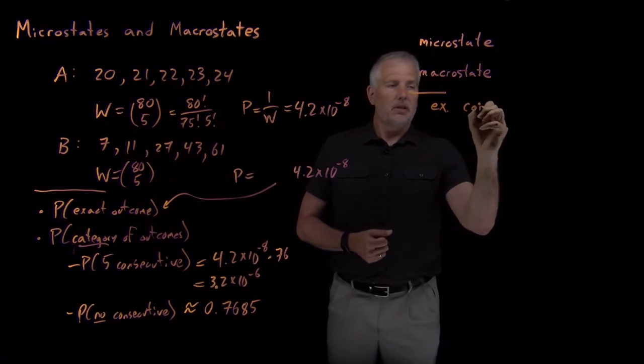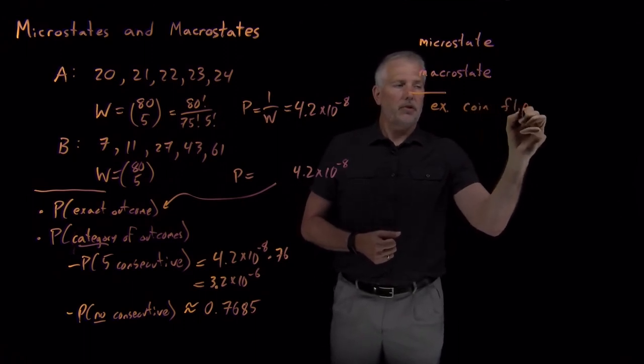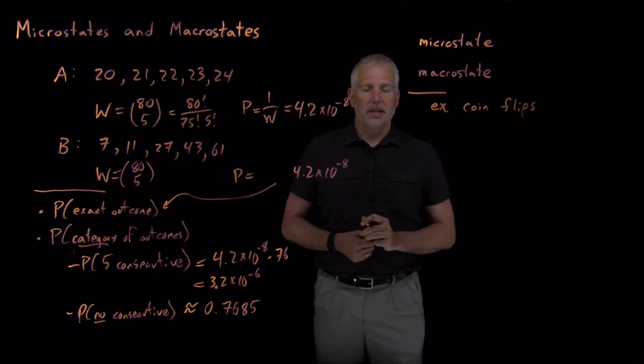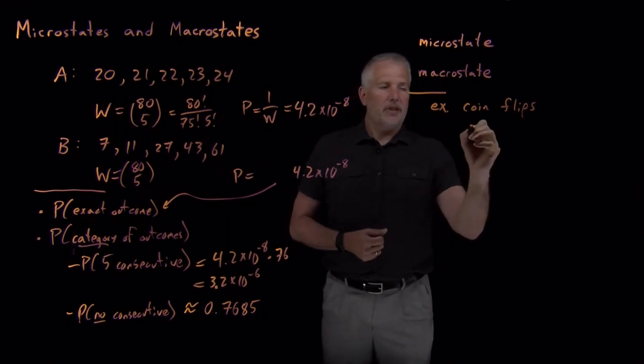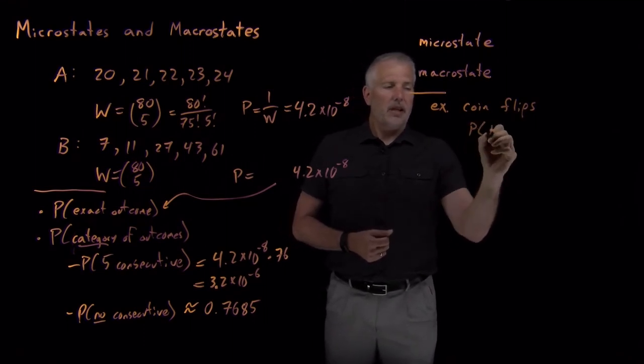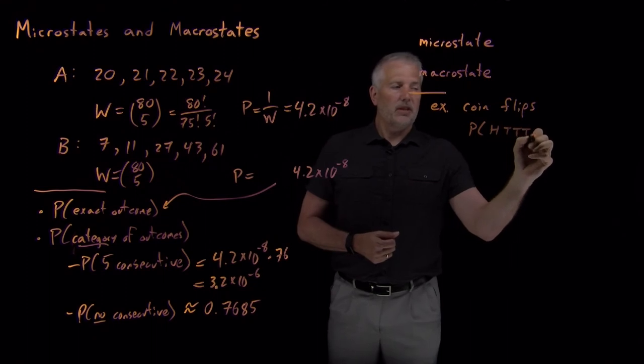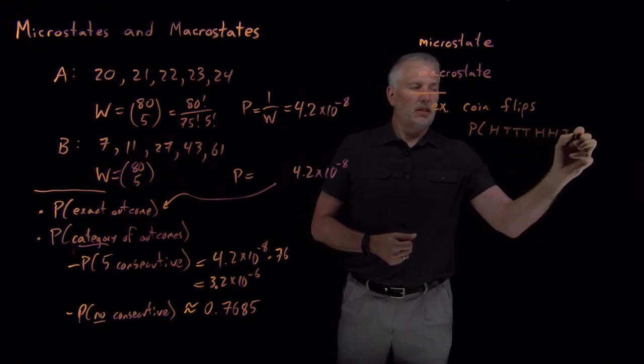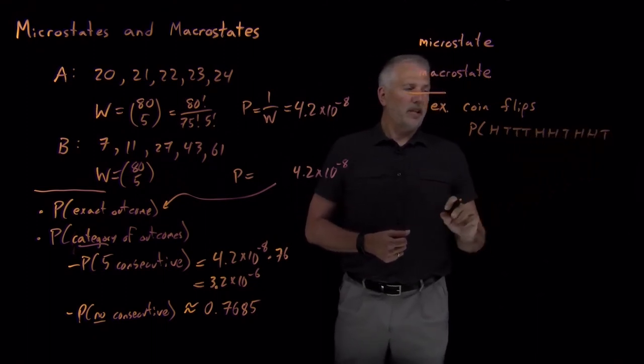This is a little bit reminiscent of the coin flip problem we've talked about when we talked about the binomial distribution. To give you some examples of microstates as opposed to macrostates.